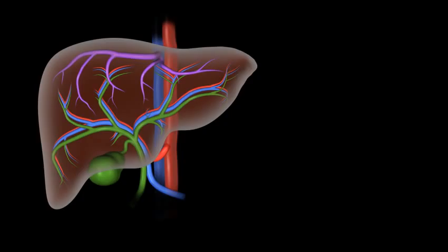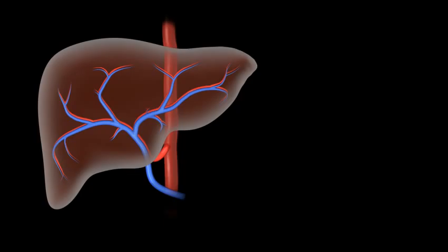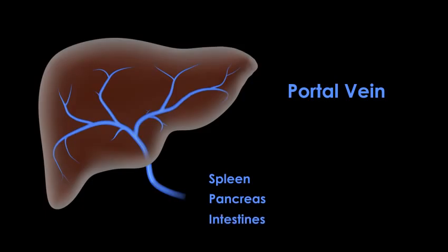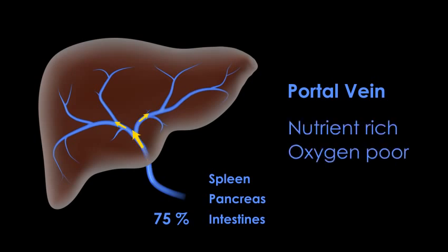The liver has dual blood supplies, one venous and one arterial. The portal vein, which carries blood from the spleen, pancreas, and intestines, contributes about 75% of the blood volume to the liver. This blood is rich in nutrients and other absorbed molecules but relatively poor in oxygen content.